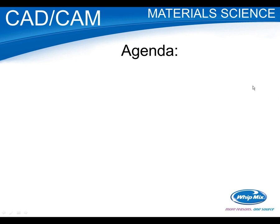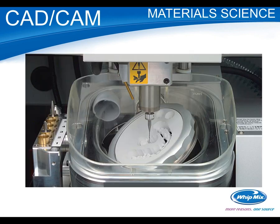I'd like to begin with a few housekeeping items. In the upper right-hand corner of your screen, you should see a questions box. Please feel free to type in any questions you may have throughout the presentation. We'll be answering all questions at the end of the webinar. The course is NBC approved for one credit. Within 48 hours you will receive information on how to obtain that credit. We will also be posting the webinar on our website in case you missed any portion or would like a review.